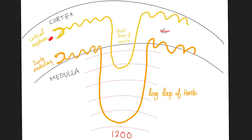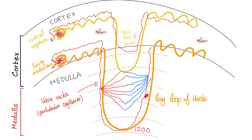Anatomically speaking, Bowman's capsule and the capillary tuft belong to the cortex (the outer part of the kidney), while the loop of Henle belongs to the medulla. Based on this, we divide nephrons into two types: cortical nephrons (very superficial) and juxtamedullary nephrons (still in the cortex but deep, close to the medulla). Juxtamedullary nephrons usually have very long loops of Henle, and the peritubular capillaries surrounding them acquire a special name: vasa recta.